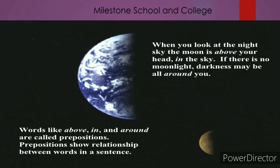When you look at the night sky, the moon is above your head in the sky. If there is no moonlight, darkness may be all around you. Words like above, in, and around are called prepositions. Students, there are some words here — above, in, and around — these are examples of the preposition.